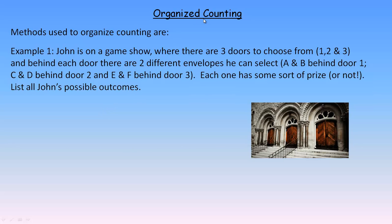This video tutorial will be on organized counting. When you're counting the number of objects or events in a set, it's a good idea to try to organize your counting. One of the common ways to do that is to make a list — as organized and systematic as possible so you don't miss things. Another way is to make charts or tables, which are really just another form of a list. An even more organized way is to make a tree diagram.